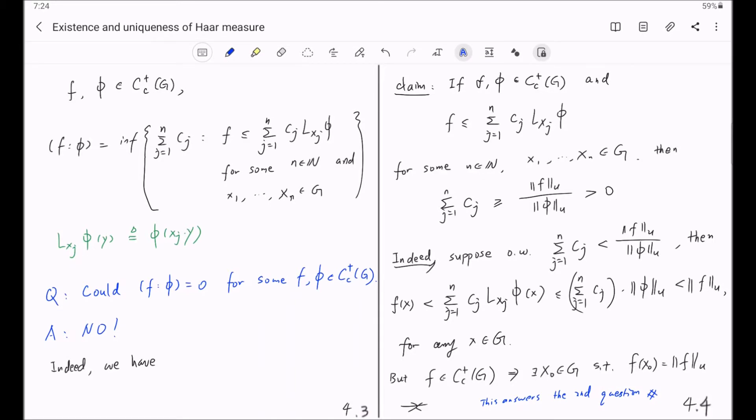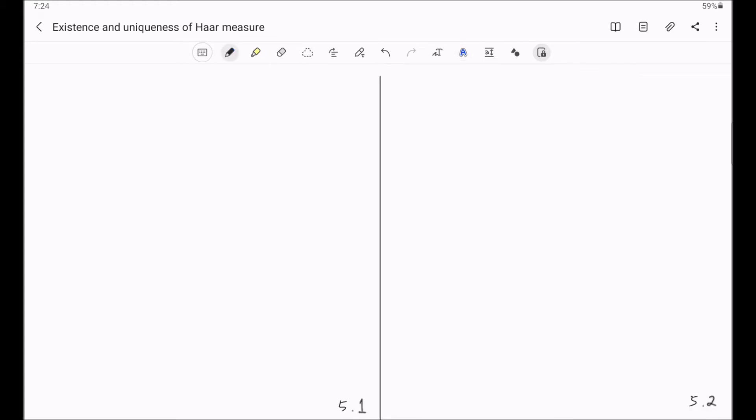With these basic two questions answered, let us study more properties of the Haar covering number F column V. I will call this Lemma 1. More properties of F column V.